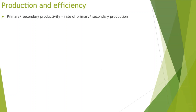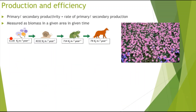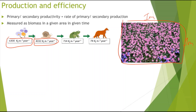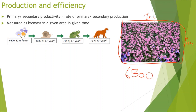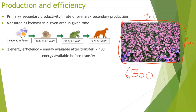Primary and secondary productivity is basically the rate of primary and secondary production, measured as biomass in a given area in a given time. For example, primary productivity might be 6,300 kilojoules per meter squared per year. Because it is measured over a given time, it is a rate.